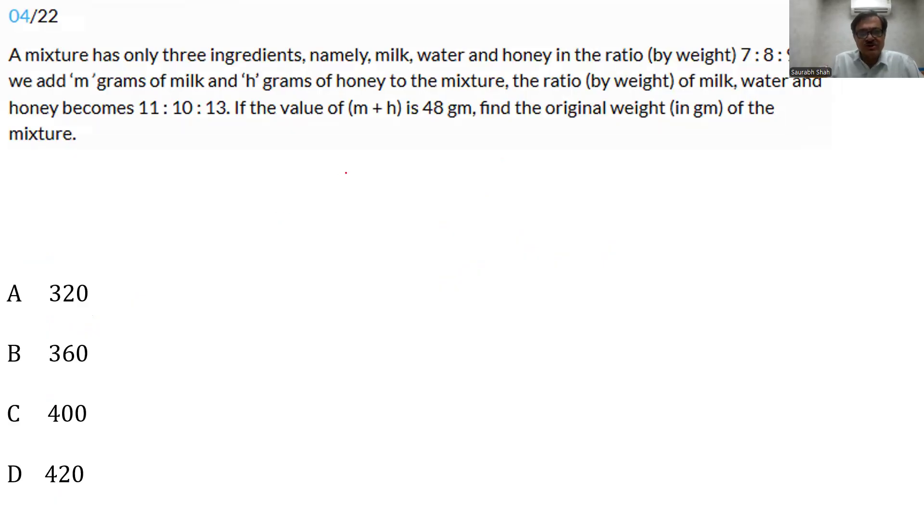Moving on we have the fourth question, a mixtures and allegations problem. Milk, water and honey are there in the ratio 7, 8, 9. We are adding milk and honey, no water. And the ratio changes. So ratio has changed but water remains the same. Water should remain the same.